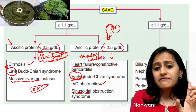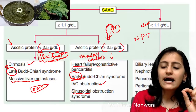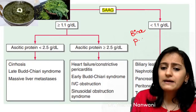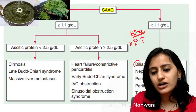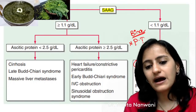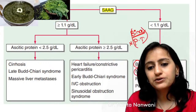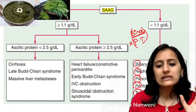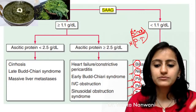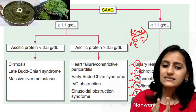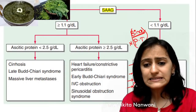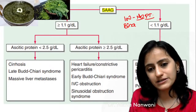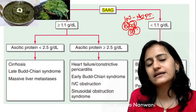Low SAAG means non-portal hypertension causes. The mnemonic: BNPPT — Biliary leak, Nephrotic syndrome, Pancreatitis, Peritoneal carcinomatosis, and Tuberculosis. None of these cause portal hypertension. So SAAG less than 1.1 equals biliary leak, nephrotic syndrome, pancreatitis, peritoneal carcinomatosis, and tuberculosis — all non-portal hypertension causes.